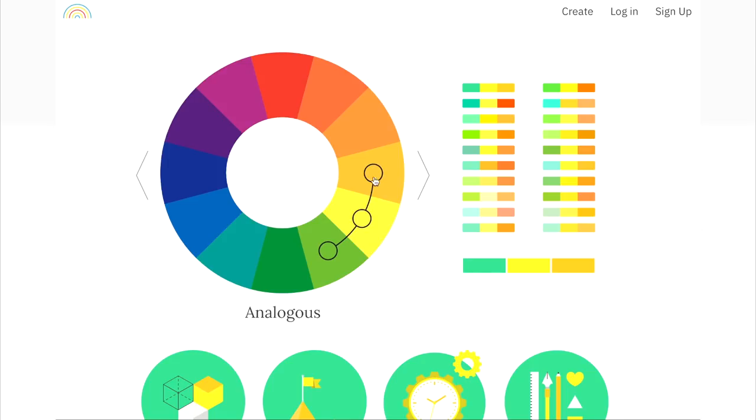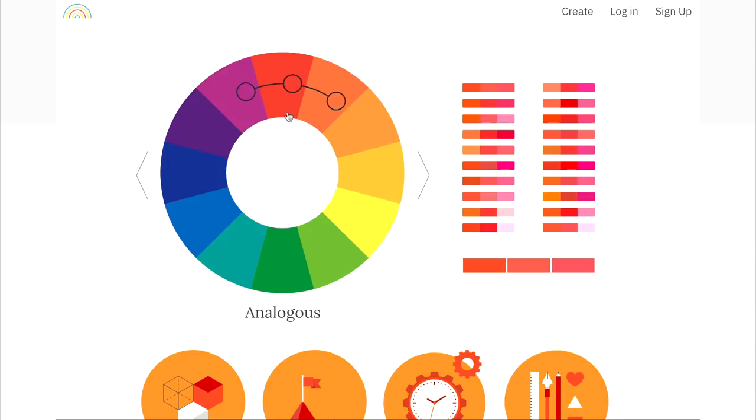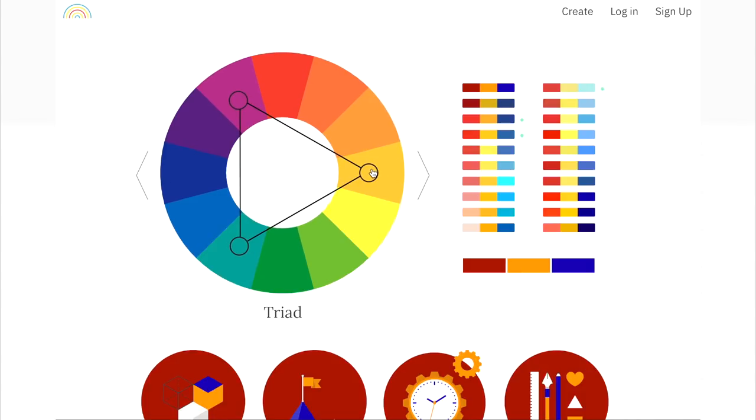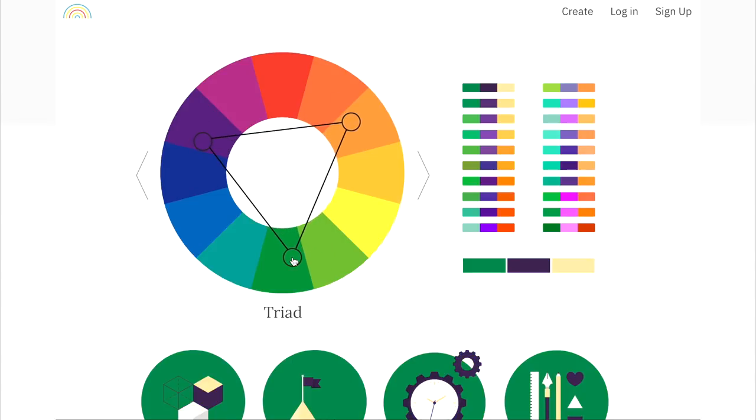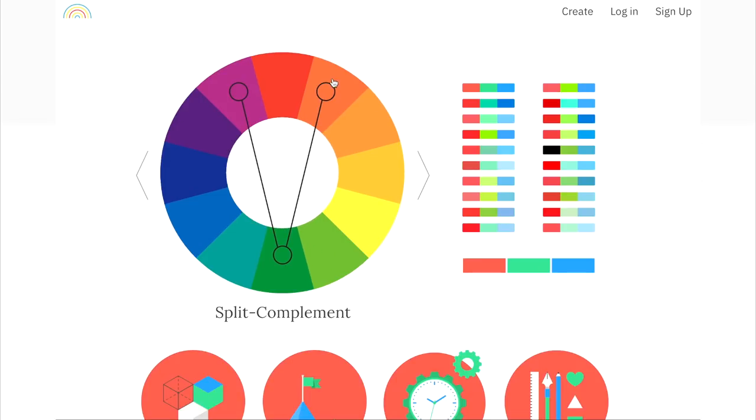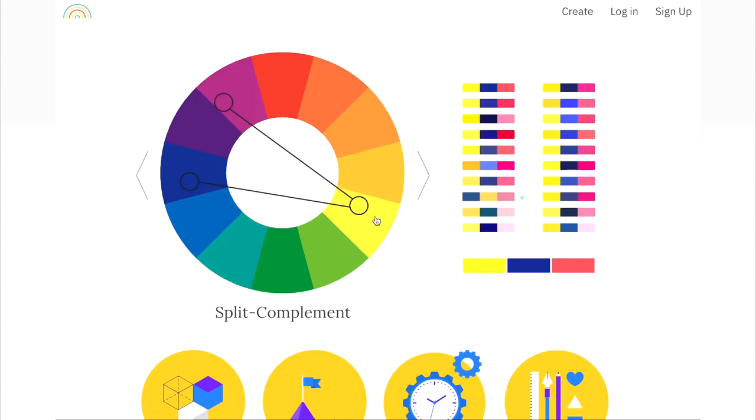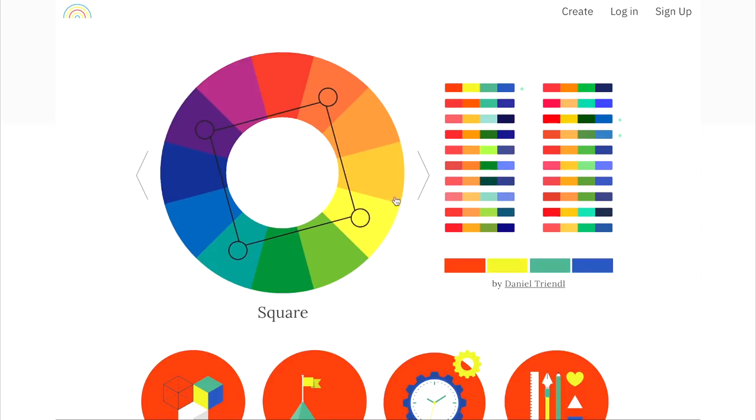But this website allows you to select from complementary, analogous, triad and split complementary and square color schemes. And it gives you a range of different kinds of color combinations within those color schemes that other users have created and it also shows you examples.